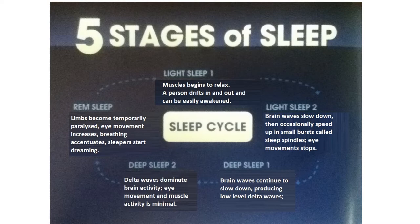These four stages are called non-rapid eye movement stages, followed by REM sleep, or rapid eye movement sleep. During REM, limbs become temporarily paralyzed, eye movement increases, breathing accentuates, and sleepers start dreaming.